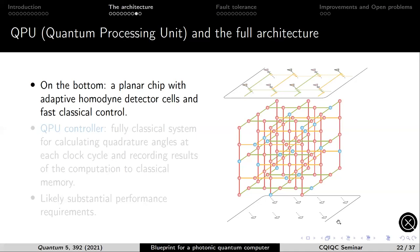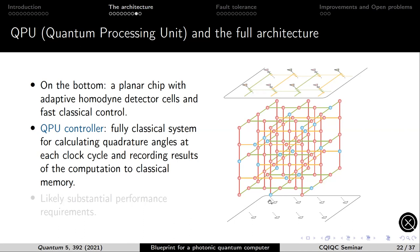The last module is the quantum processing unit — a classical system. The homodyne measurements are sent to a classical compute system that calculates what quadratures need to be measured based on the gates that a user sends to the device, and also based on the measurement outcomes of previous rounds, which are used to perform error correction. Depending on the decoding algorithm, this classical compute system will likely require substantial classical compute performance, since results are needed in time for the next layers of the cluster.